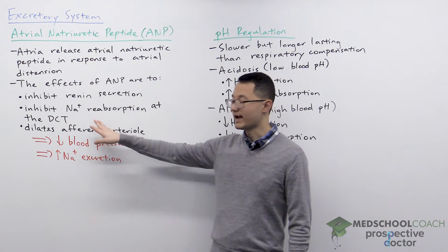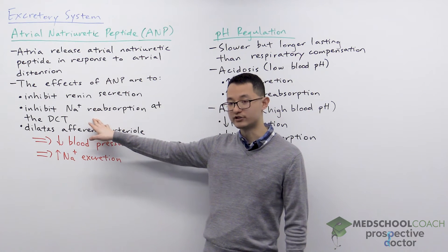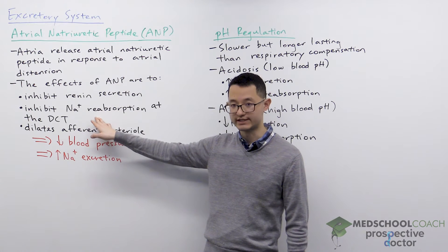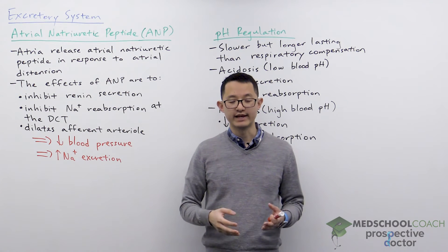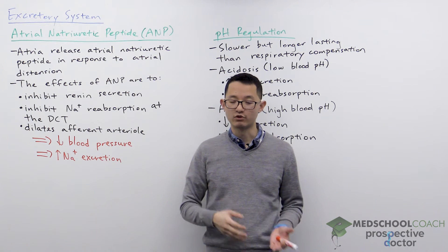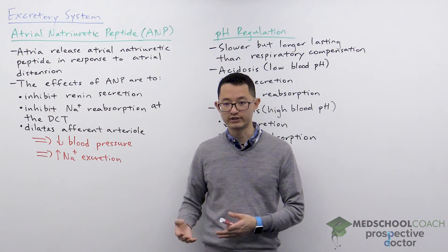ANP also acts directly on the distal convoluted tubule to decrease sodium reabsorption, meaning more sodium gets secreted.